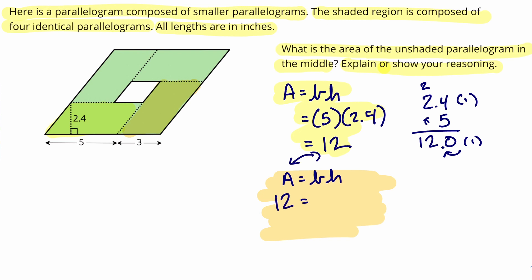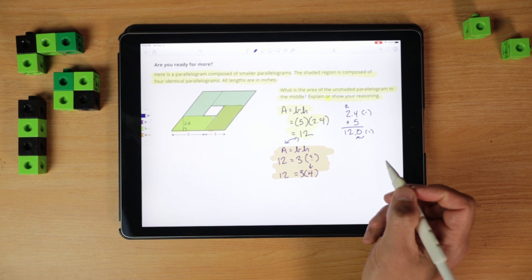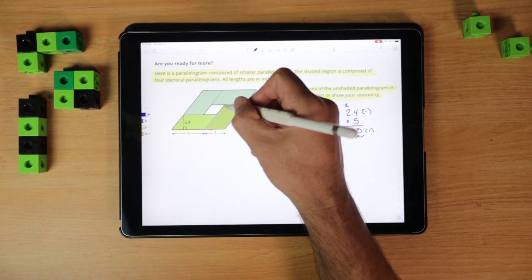We know the base of this one to be 3. So we have to figure out what the height is. 3 times what number is 12? That number is 4. So we have a height of 4 for this parallelogram.